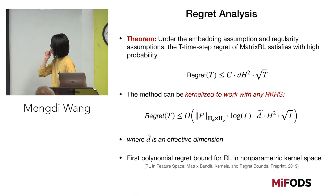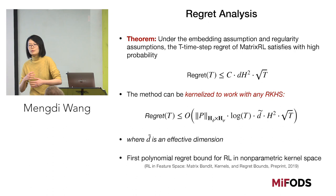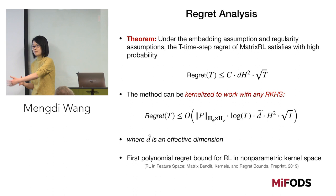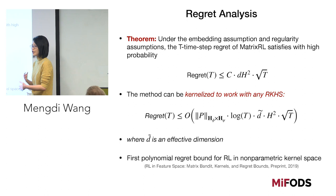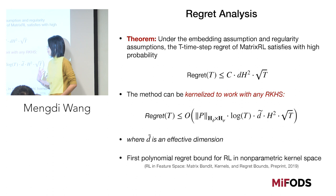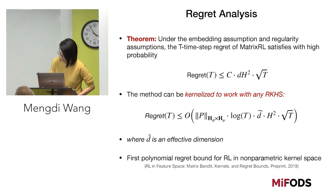We can also extend this to the more general case with non-parametric kernel spaces for value function and Q-function approximation. In that case, the algorithm can be written in a kernelized way, and the regret depends on the RKHS norm of the ground-truth transition operator and a particular notion of effective dimension that relates to the underlying environment.